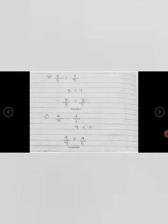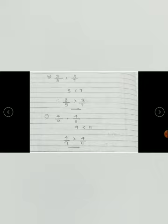Let's see one example: 3 by 5 and 3 by 7. Here the denominators are different, so these fractions are unlike fractions. The numerators are same — both are 3. Now when we look at the denominators, they are 5 and 7. Since 5 is smaller, the fraction with denominator 5 will be greater. That means 3 by 5 is greater than 3 by 7. The fraction which has the smaller denominator will be the larger fraction. Here 5 and 7 are the denominators; 5 is smaller, therefore 3 by 5 is greater than 3 by 7.